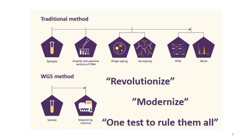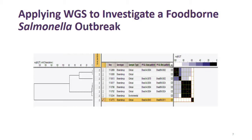Patrick Tang used to say that whole genome sequencing promises to be the one test to rule them all. With a single WGS run you can determine many different features: you can diagnose, confirm, genotype, and now even look for virulence factors. Of course there are growing pains in operationalizing this routinely — it is technically challenging and more expensive than routine tests.